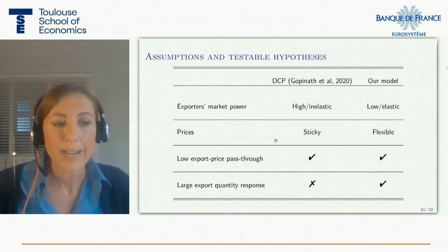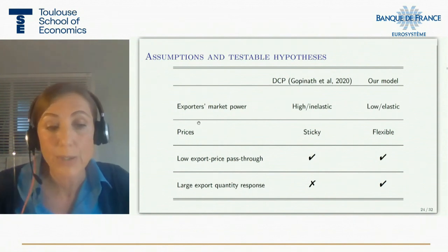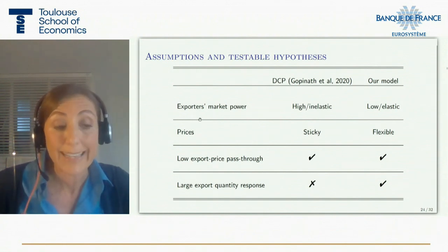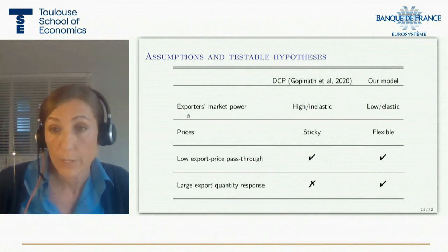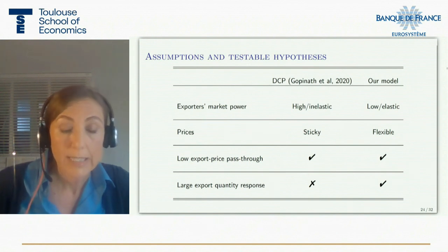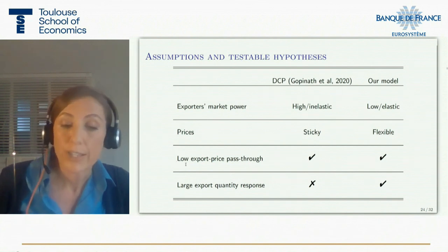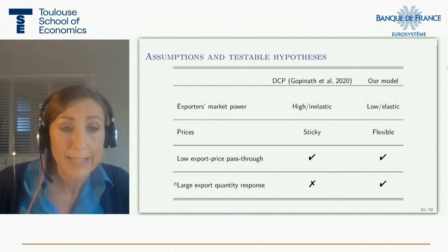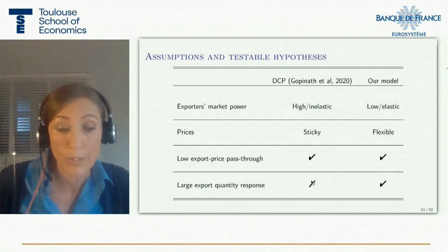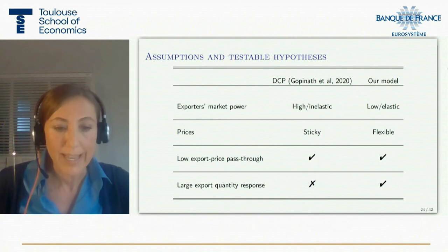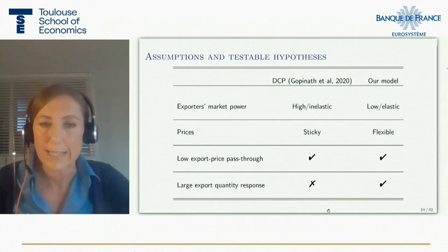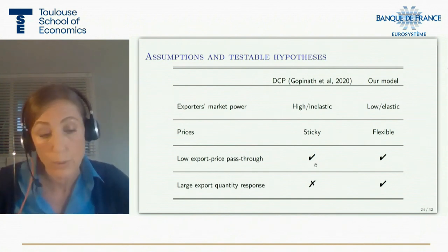This table summarizes the key differences between the two models. The dominant currency literature assumes exporters have high market power and face fairly inelastic demands, whereas our model allows for more competition across countries with high elasticity of demand for individual varieties. The dominant currency literature assumes sticky prices, whereas we assume prices are adjusted with high frequency. Both models predict low pass-through from exchange rates to export prices in dollars, but the dominant currency paradigm predicts little export quantity response, whereas our model predicts exports respond strongly. We argue our model is more suitable to represent developing and emerging economies and optimal policy in those countries.